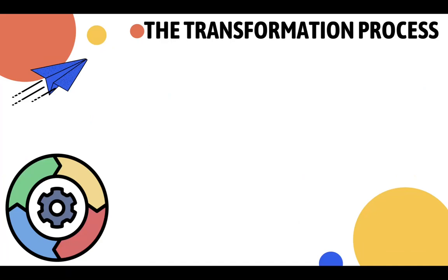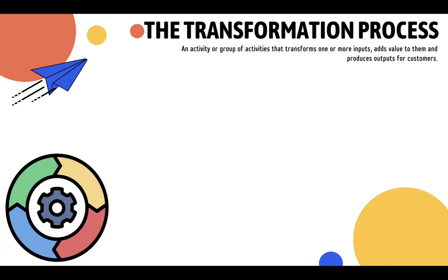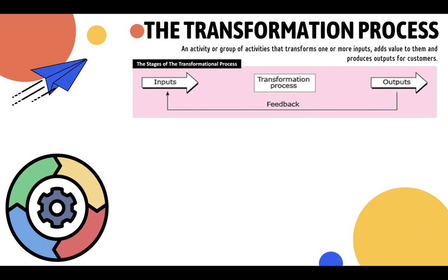Now let's move to the transformation process. Just like the word implies, it is about how a raw material moves from an input to a final good or service. The transformation process is defined as an activity or group of activities — not just one thing — it takes a series of activities to transform one or more inputs, adding value to them so they become an output for customers to buy.